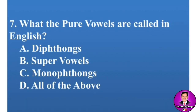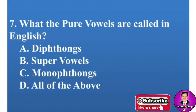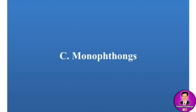Next MCQ: What are pure vowels called in English? Options are: A, diphthongs; B, super vowels; C, monophthongs; D, all of the above. The correct answer is C — monophthongs.